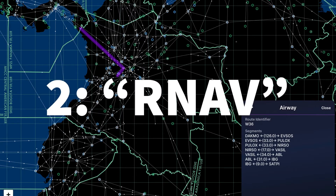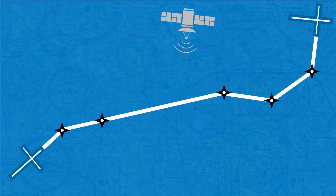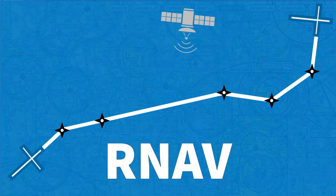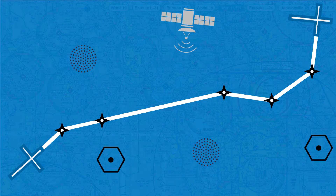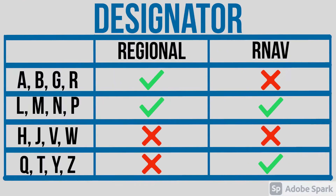On the other hand, the expression Area Navigation Route refers to RNAV, which is a type of navigation primarily based on GPS that does not use VORs, NDBs, or any type of conventional navaid. With that in mind, letters Alpha, Bravo, Golf, and Romeo are used for routes that form part of these regional networks or fairways, but are not area navigation routes.